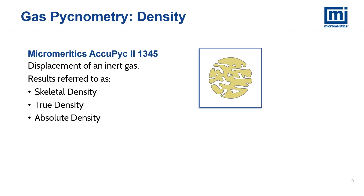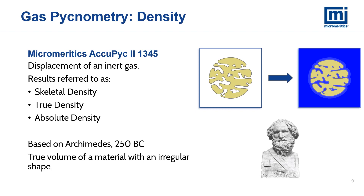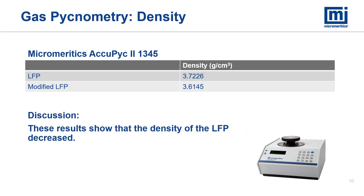The first technique we used is gas pycnometry, used to determine the skeletal density. The volume of an inert gas displaced in the chamber is equal to the volume of the material under test. If you know the mass of the material, we can calculate the density. The results are usually referred to as skeletal density, but also called true density or absolute density. This is a time-tested technique based on Archimedes. The results of the analysis on the ACUPIC 2-1345 show that the density of the LFP decreased as a result of the coating or modification — so the modified LFP has a slightly lower density than the uncoated LFP.